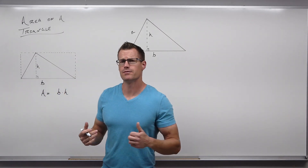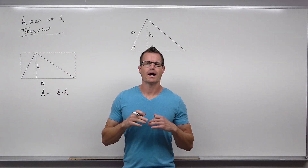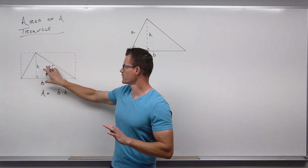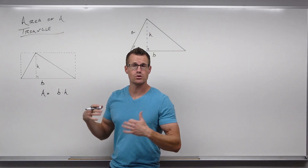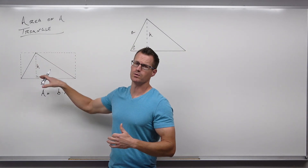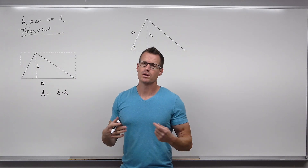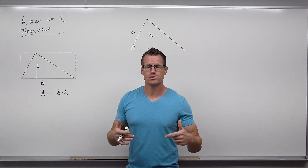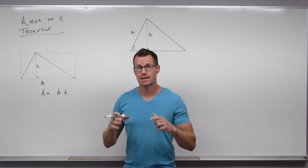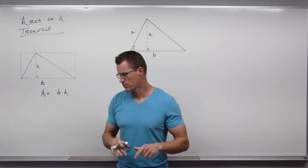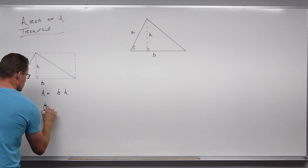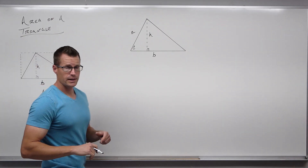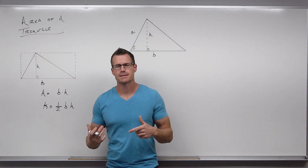That would be the area of the entire rectangle. But we figured out that area by doubling the triangle. So the area of the rectangle is twice what the triangle would be. If we divide by two, or multiply by one half, we get the area of the triangle. We sometimes use the letter K for area. So K equals one half base times height — that's where the triangle area formula comes from.